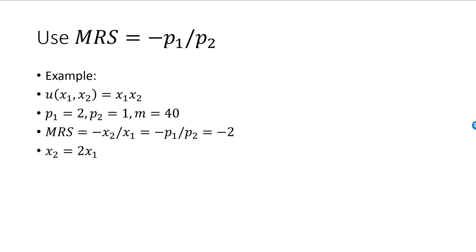We can simplify this by multiplying both sides by minus x1, giving us x2 is equal to 2x1. Our second equation is the budget constraint, 2x1 plus x2 must be equal to 40. I have two equations and two unknowns.